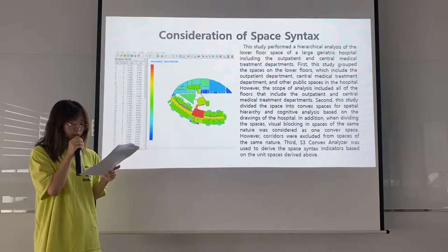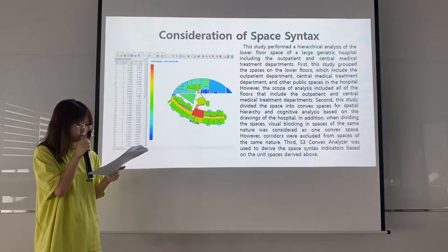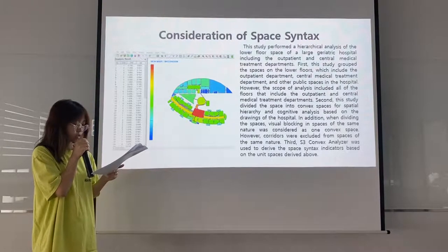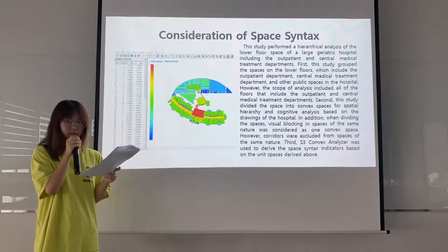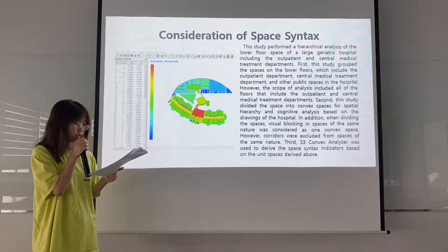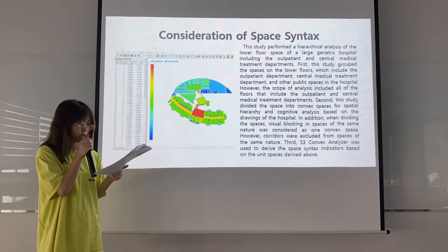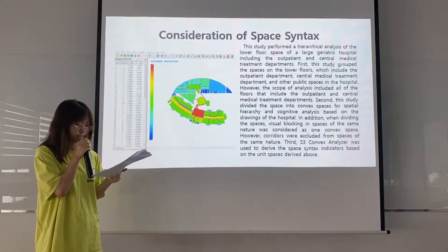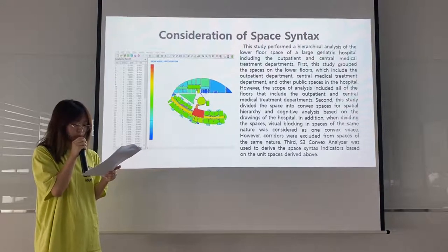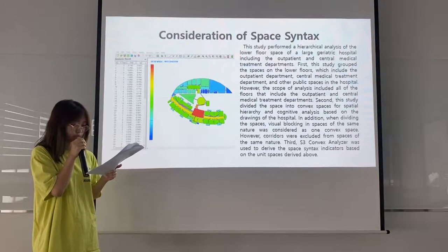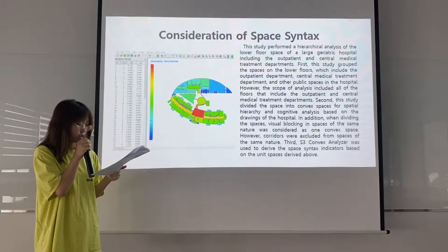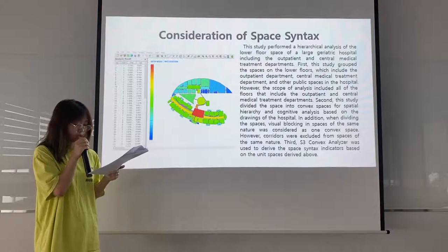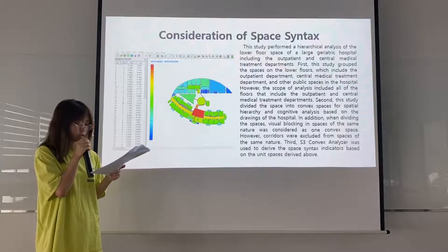Second, this study divided the spaces into convex spaces for spatial hierarchy and cognitive analysis, based on the drawing of the hospital. When dividing the spaces, visual blocking in spaces of the same nature was considered as one convex space. However, corridors were excluded from spaces of the same nature. Third, a convex map analysis measure was used to derive the space syntax indicators based on the unit spaces derived above.